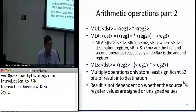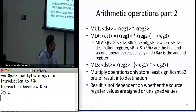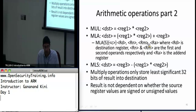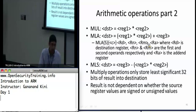Next we'll go into multiply operations. Multiply takes two registers, multiplies them, and stores the result into the destination register. Multiply with add (MLA) takes three registers plus the destination — it multiplies the first two and adds the third, called the addend. Multiply with subtract (MLS) takes the first two registers, multiplies them, then subtracts that from the third. Why do they provide these combined operations? Likely for optimization based on their hardware design.